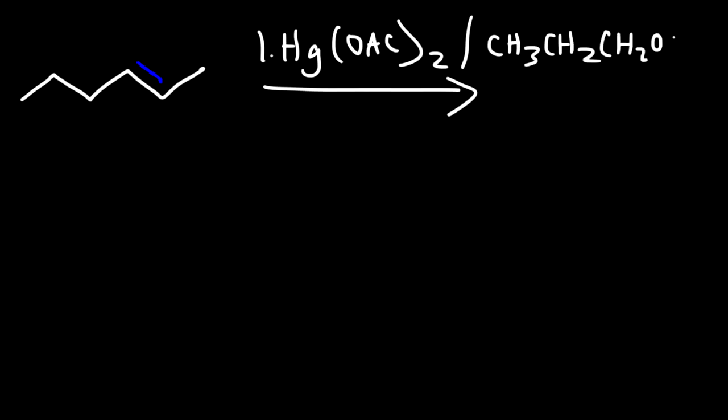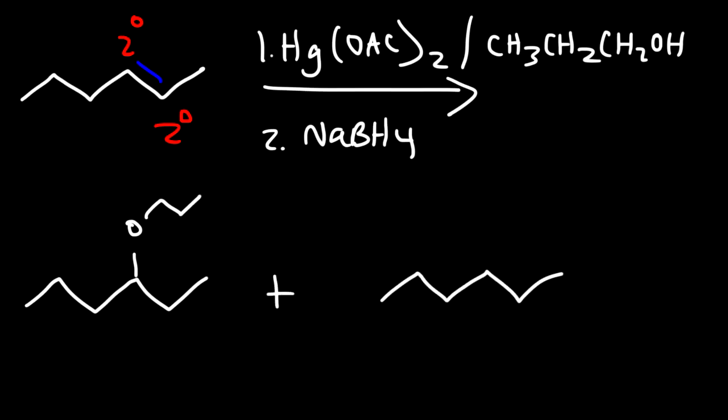Now let's work on some other examples. So instead of using ethanol, I'm going to use propanol this time, specifically 1-propanol. So looking at the carbon atoms that are part of the double bond, they're both secondary. So the alcohol can go on any one of those carbon atoms. So we can add the alcohol on this carbon. I'm going to draw this as a line structure. Or we can add it on this carbon.